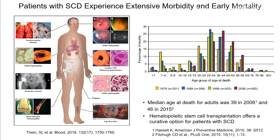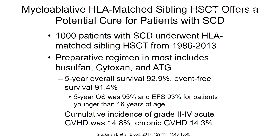Hematopoietic stem cell transplantation offers a curative option for patients with sickle cell disease. The most common type is where the donor is a sibling who is a complete tissue match, using myeloablative chemotherapy — meaning high doses of chemotherapy with the goal of completely replacing the patient's bone marrow with that of the donor. A study of 1,000 patients who underwent HLA-matched sibling transplant between 1986 and 2013 received busulfan, cytoxan, and ATG. The five-year overall survival was 93%, with an event-free survival of 91%.